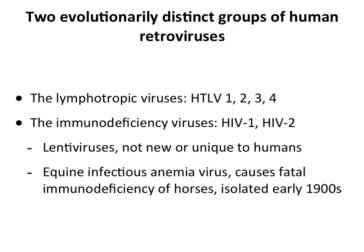There are two distinct groups of human retroviruses. The T-cell lymphotropic viruses HTLV-1, 2, and 3 have tropism for T cells and cause various leukemias. Then there are the immunodeficiency viruses HIV-1 and HIV-2, which are lentiviruses. HIV was not a new type of virus when discovered in 1983 — we already knew other lentiviruses in animals. For example, equine infectious anemia virus, which causes immunodeficiency in horses, was isolated in the early 1900s.